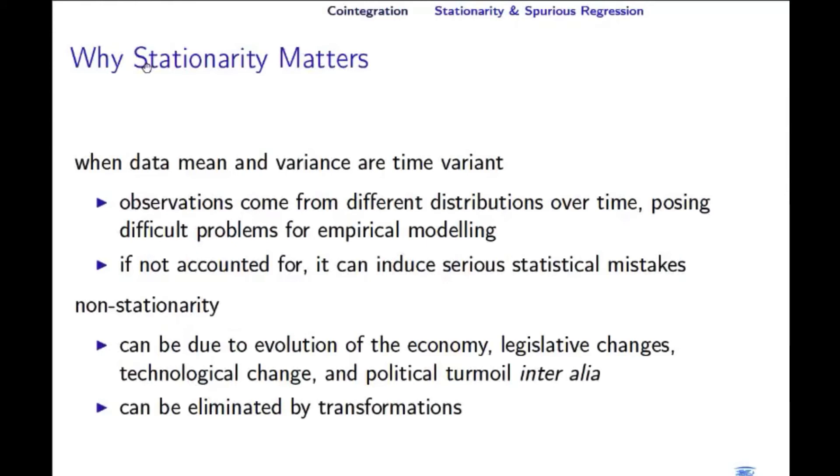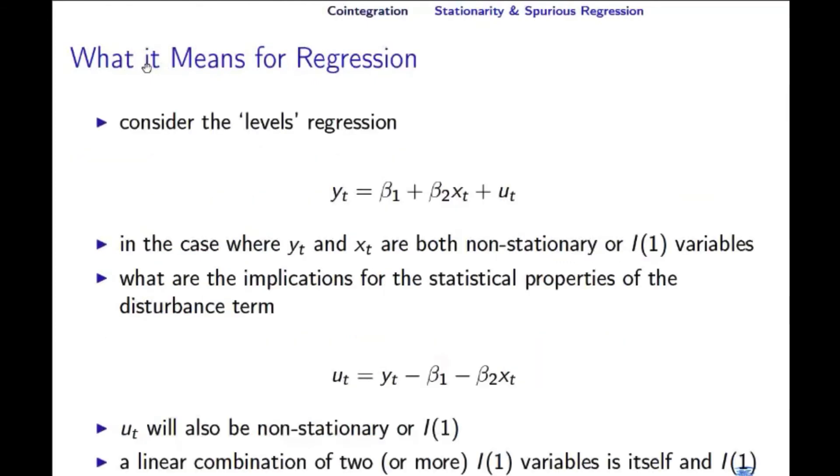Stationarity. So the question here, why stationarity matters then? So we could just put time trend, and then we capture what's happened over time. But this is still a problem, because when data mean and variance are time variant, so when data is non-stationary, that means this observation come from different distribution over time. And this causes some difficult problems for empirical modeling. So that mainly can cause serious statistical mistakes, and that is the main problem. And this is what I'm going to explain now.